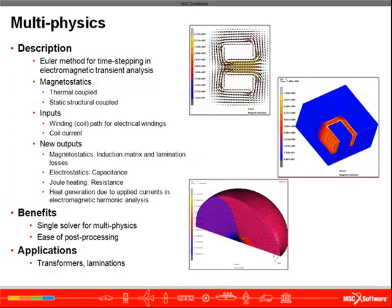Using magnetostatic thermal coupling, heat generation in magnetostatic devices can be computed. In magnetostatic devices, the source of heat generation is the applied currents flowing through conductors. Marc uses a staggered approach,